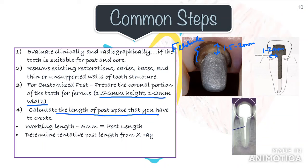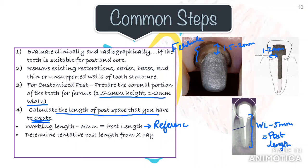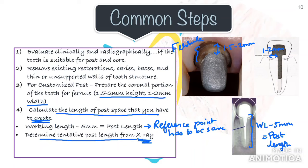The third step is to calculate the length of the post space. If you have performed the root canal procedure, you already know the working length — subtract 5 mm from the total working length to give you the post length. Make sure the reference point originally taken for working length is the same; if you've shaved down the original reference point for a ferrule, modify the working length accordingly. Another way is through a radiograph: take an RVG or IOPA, determine the length of the obturated canal, and subtract 5 mm. However, the RVG may not always give the correct working length due to elongation or shortening.